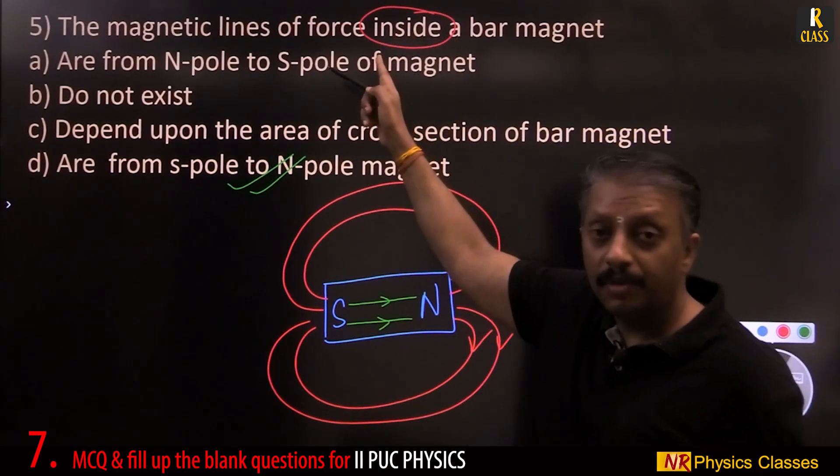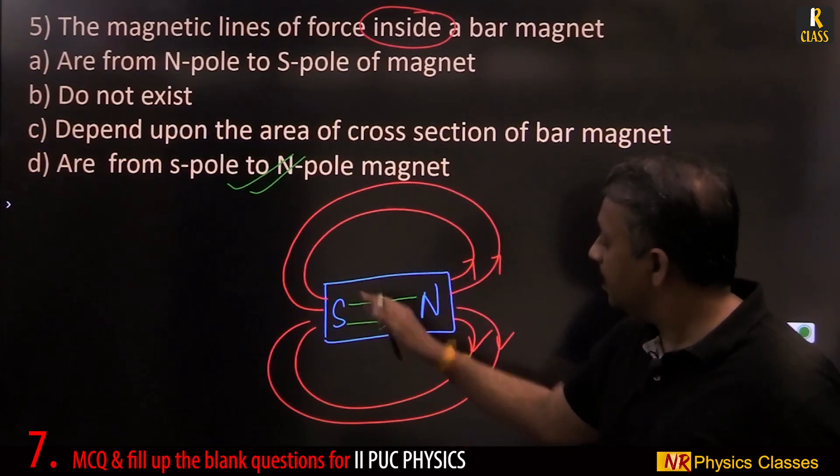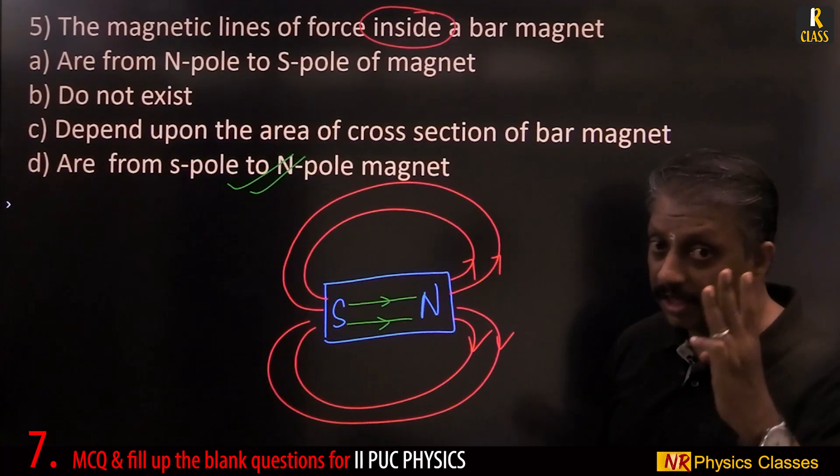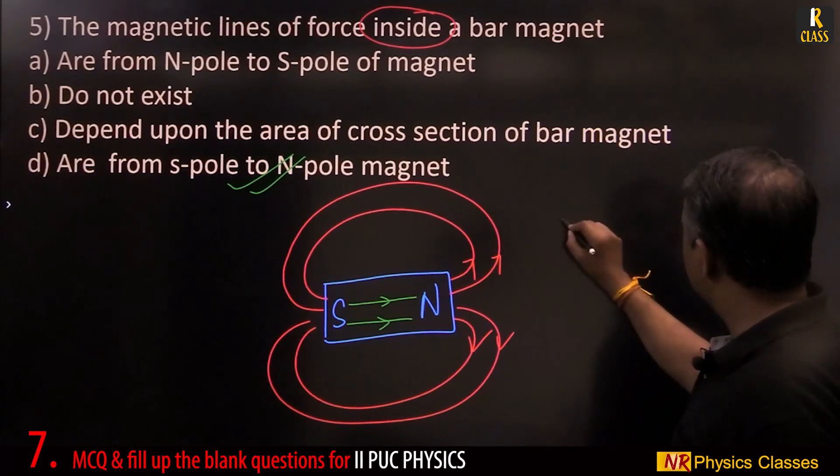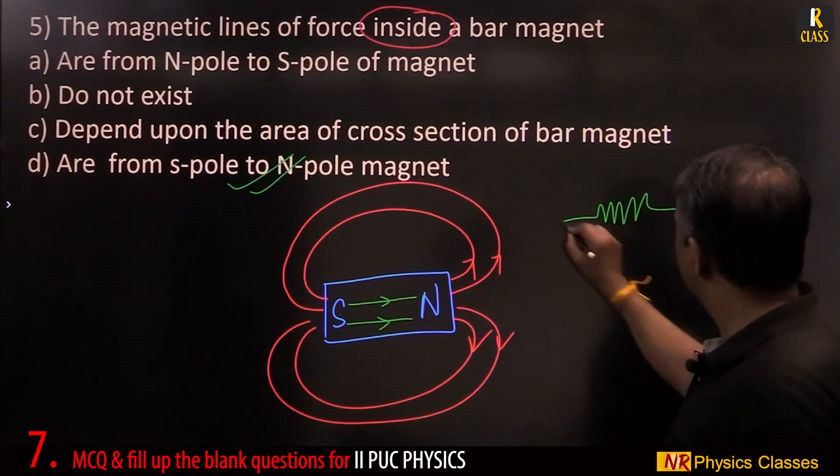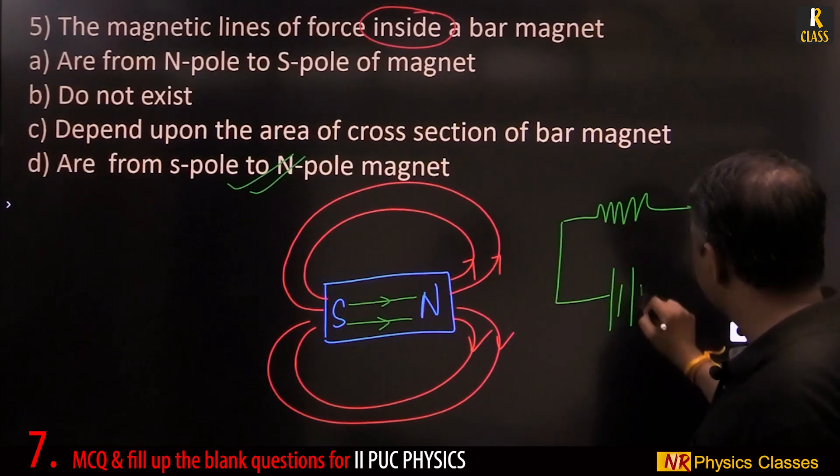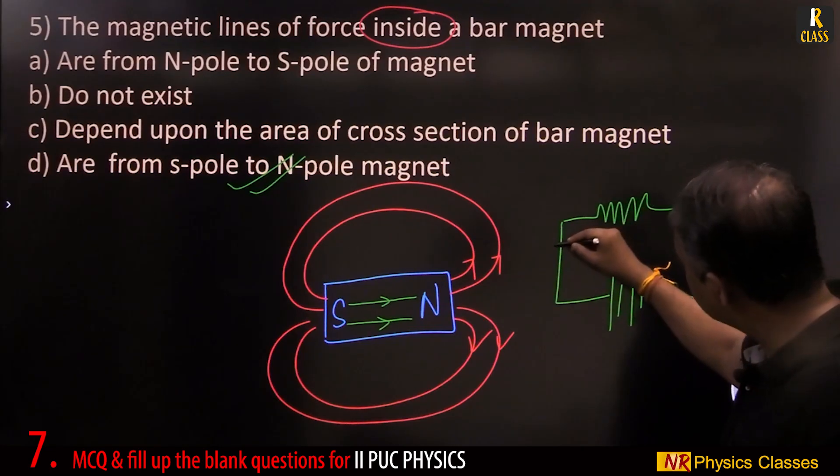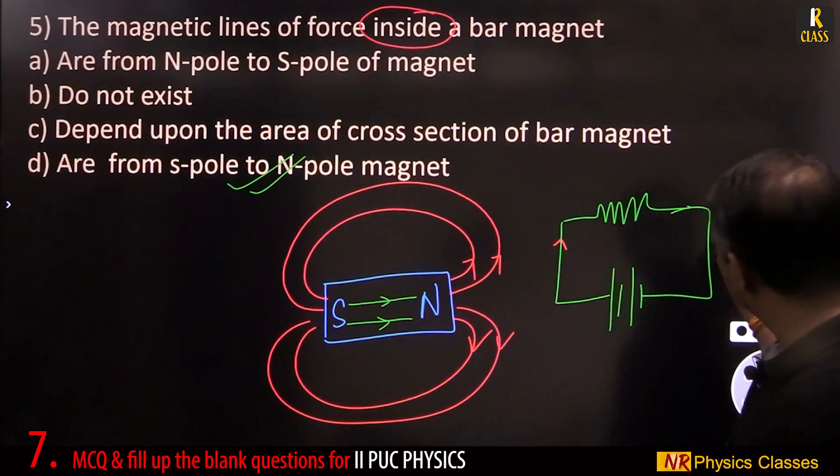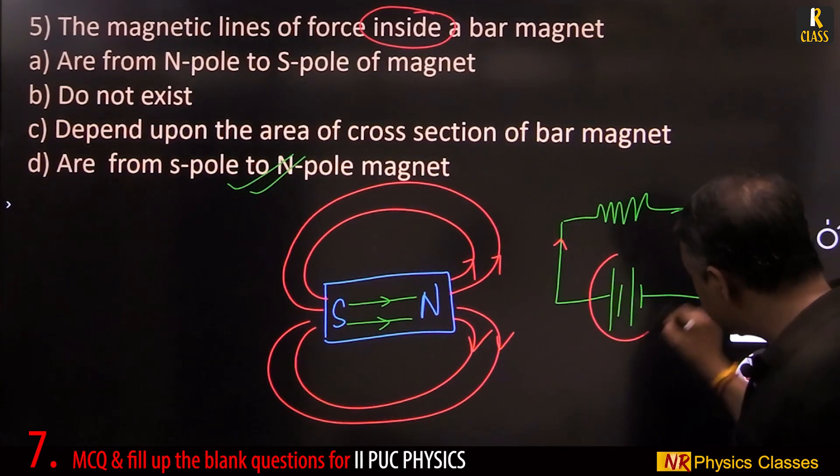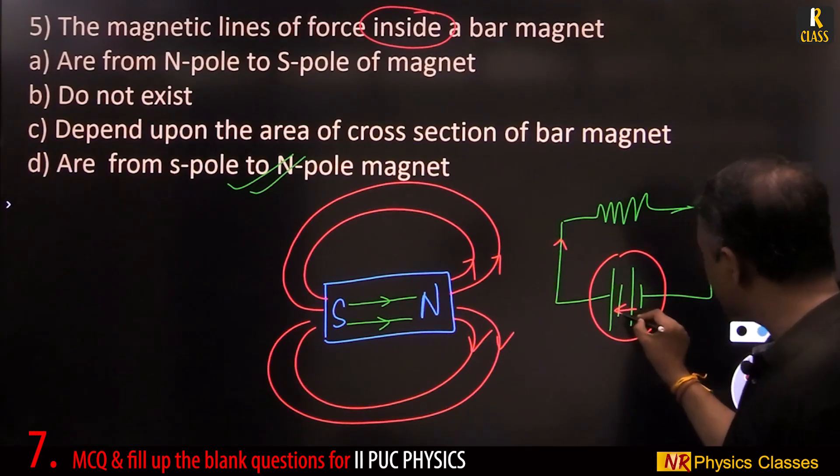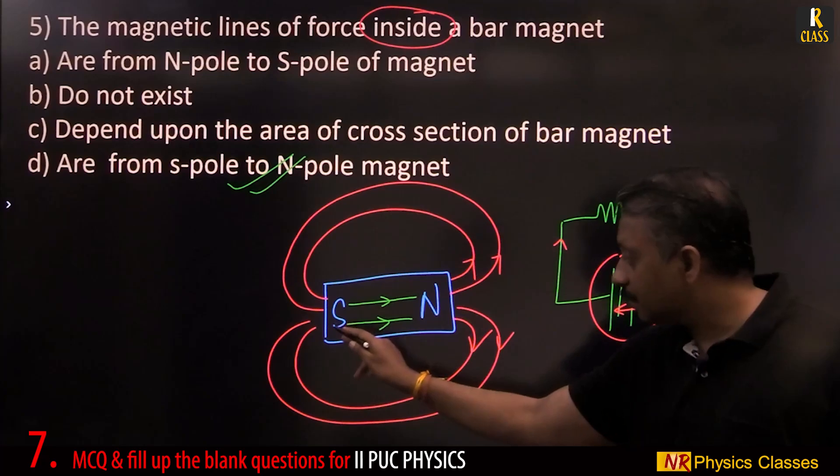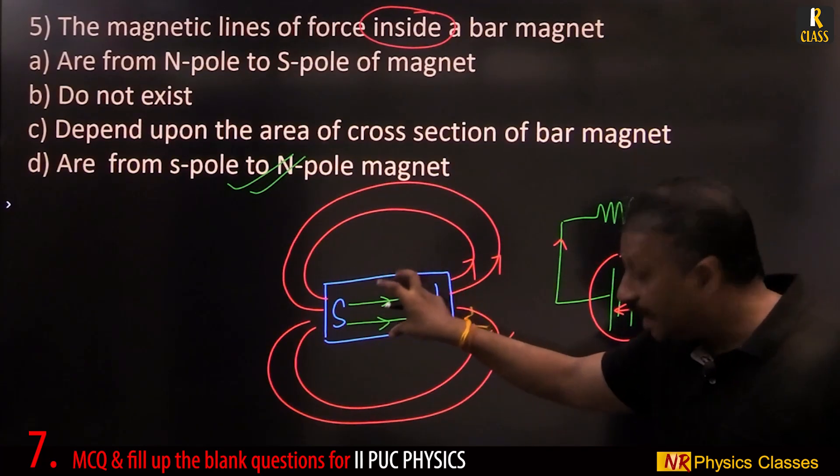Students, please make a note. Outside, inside, north to south. Similarly, there is one more question in third chapter. This is a resistor connected to a battery. The direction of current in the external circuit is from positive to negative, but inside this it is from negative to positive. Similarly, lines of forces are from south to north inside the bar magnet.